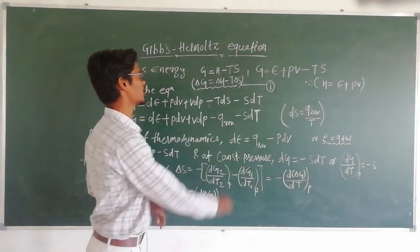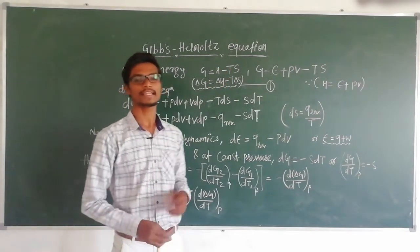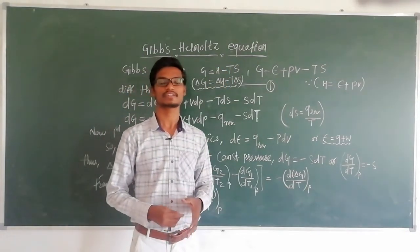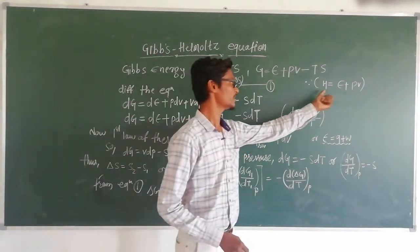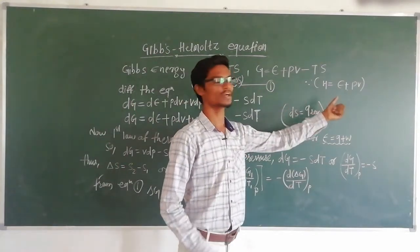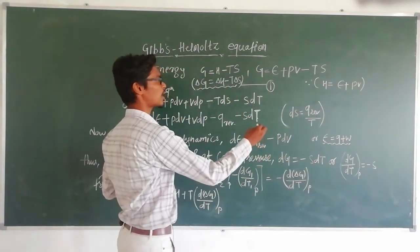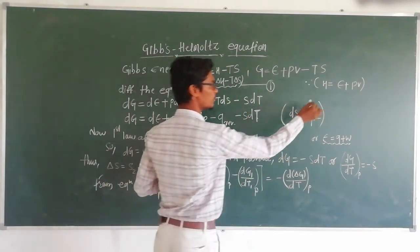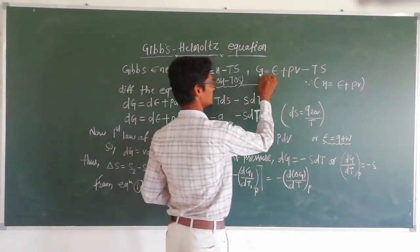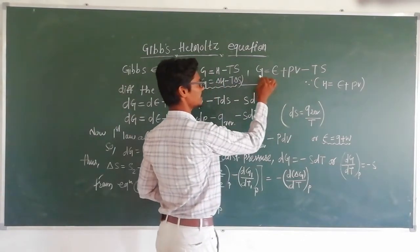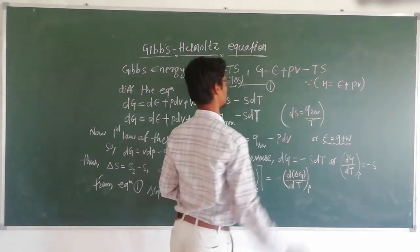According to the formula for enthalpy, we know that enthalpy is nothing but internal energy plus pressure-volume energy. So now we are going to put this H value in this equation, and the equation becomes G is equal to H plus PV minus TS.